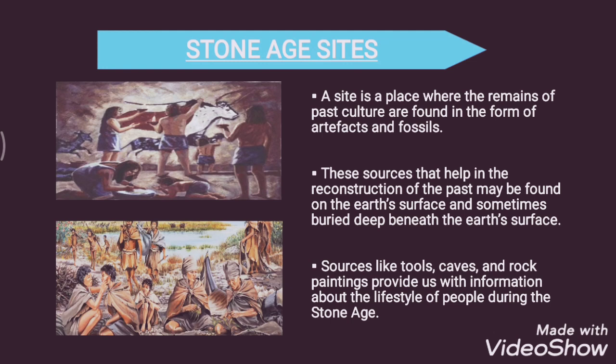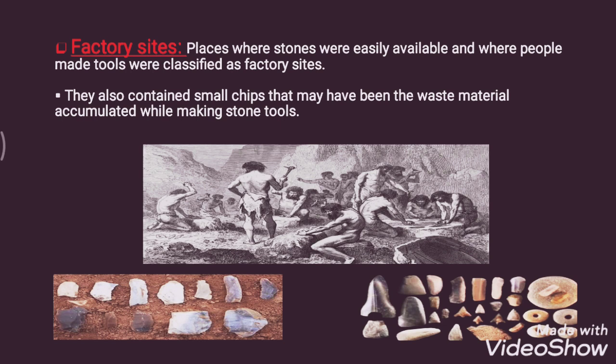Sources like tools, caves, and rock paintings found underwater provide us with information about the lifestyle of people during the Stone Age. A large number of finished and unfinished stone tools have been found at different sites in India. The places where stones were easily available and where people made tools were classified as factory sites.